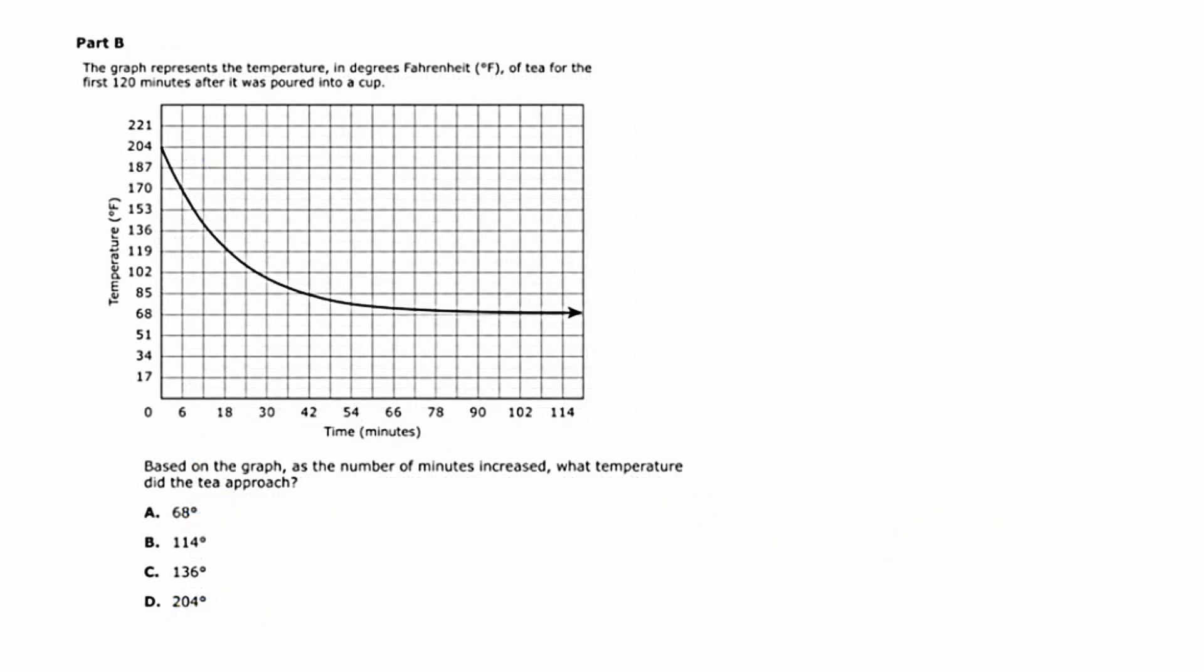So now we're on part B, and the graph is still the same. We still have this cup of tea that's being cooled over a two-hour period. But now the question's changed. The question asks, based on the graph, as the number of minutes increased, what temperature did the tea approach?